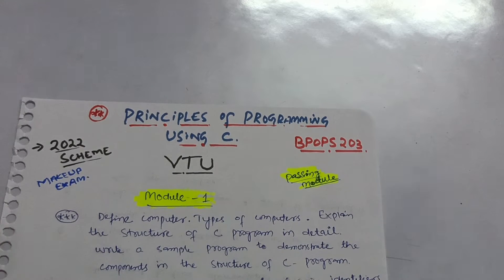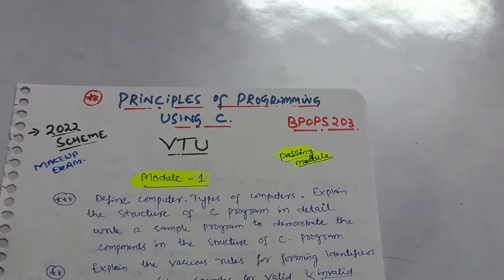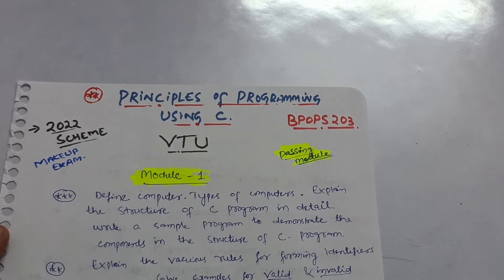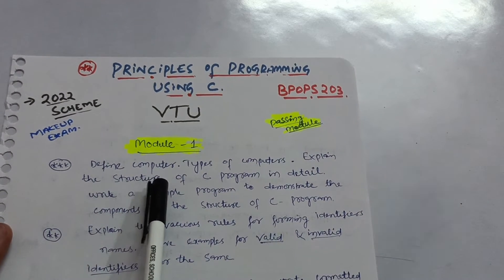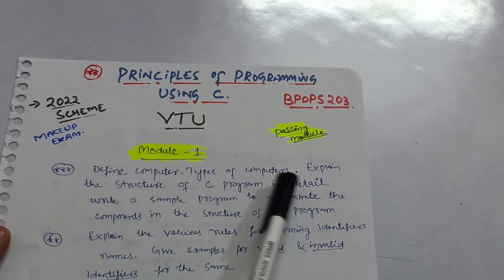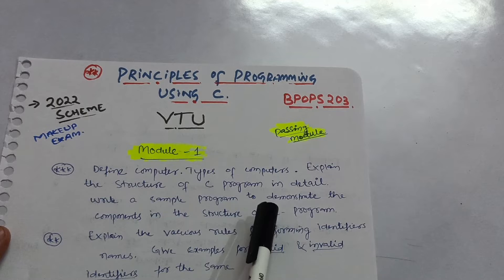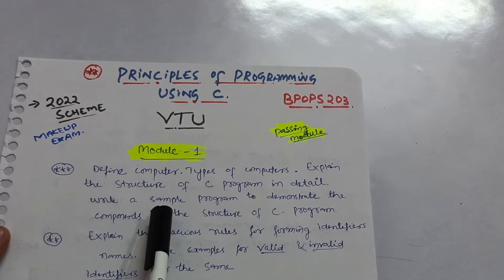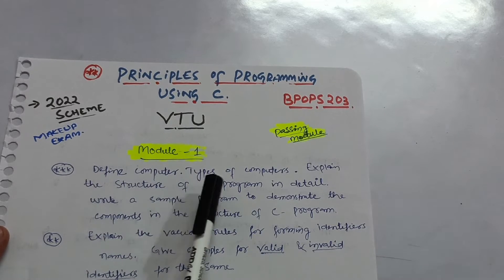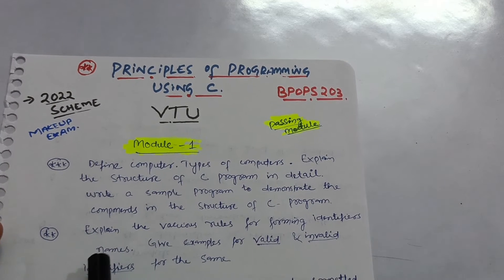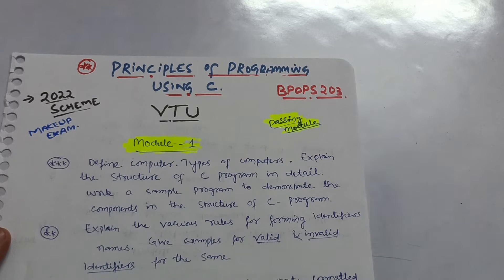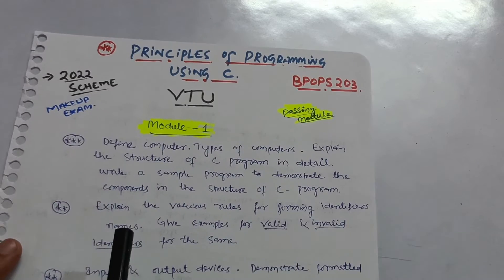In Module 1 there are theory concepts you should go through. You can easily score 20 marks in this module. The first important question is 'Define computer and types of computers,' and 'Explain the structure of a C program in detail with a sample program to demonstrate its components.' Next, explain the various rules for forming identifier names and give examples for valid and invalid identifiers.